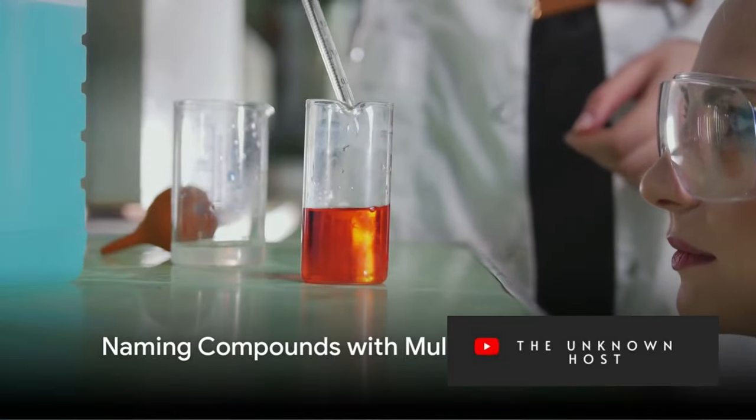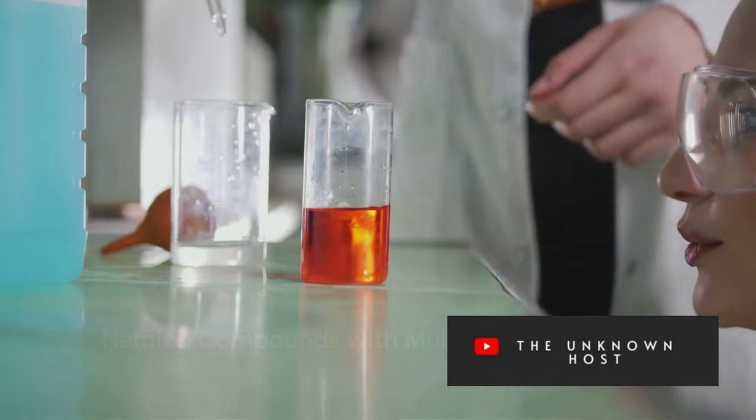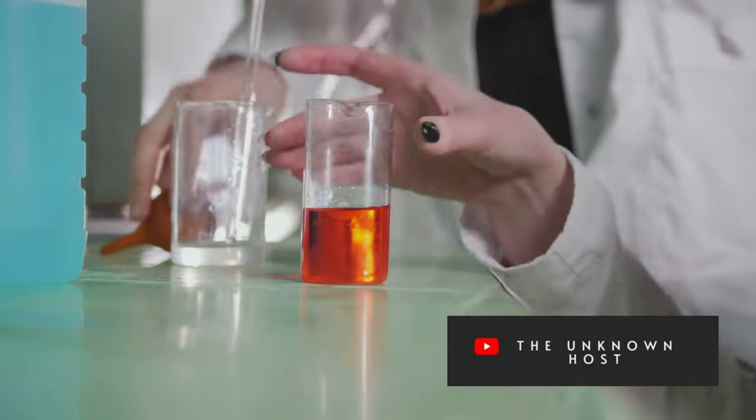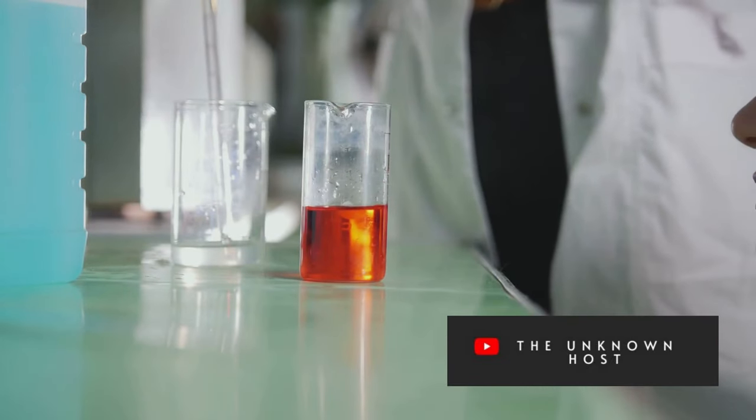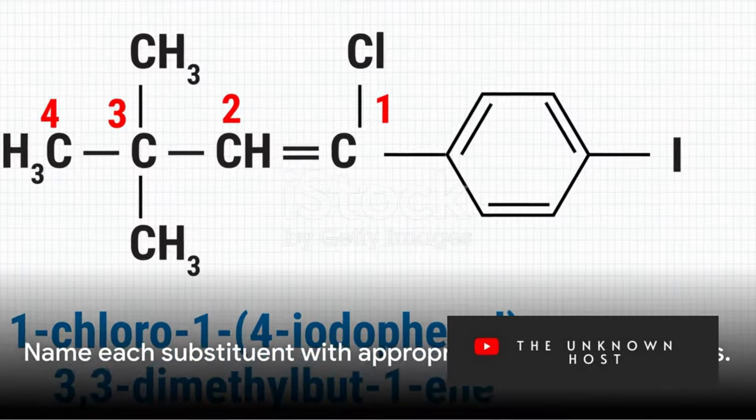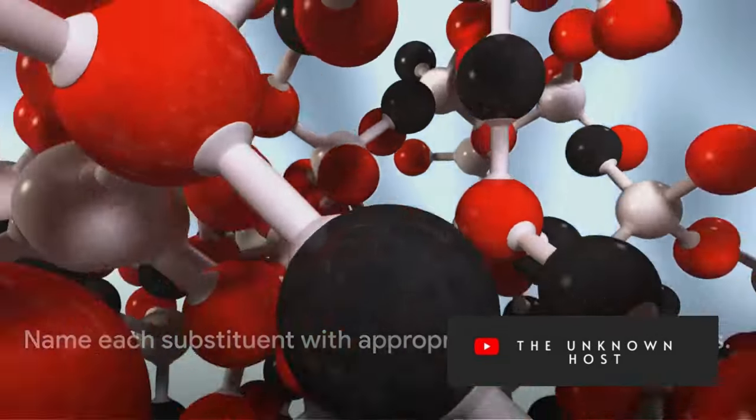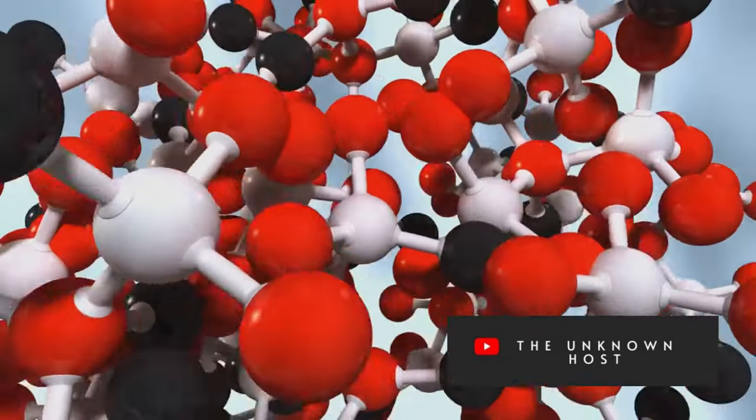Complex organic compounds often have multiple substituents, making the naming process more intricate. Here's how you approach it. Let's practice naming a compound with multiple substituents: 4,5-dichloro-3-ethylheptan-2-ol. What's its IUPAC name?